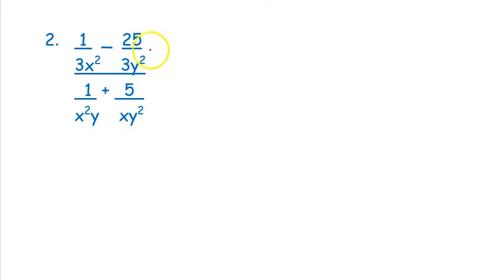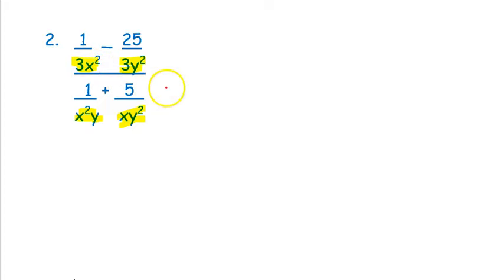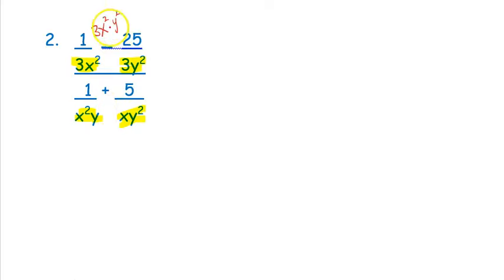Example two is a similar situation, but I have more fractions — four of them. I look at the denominators of all the little fractions to decide what I need to multiply by. I definitely need 3 as part of my common denominator so those will cancel, and I definitely need x² and y² so those will cancel too.